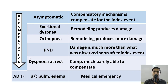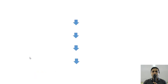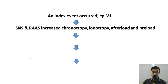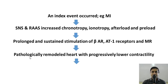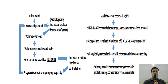If acute decompensated heart failure is not treated immediately, we may lose this patient. To summarize: an index event like an MI caused an increase in sympathetic nervous system activity and the RAS, leading to increased chronotropy, inotropy, afterload, and preload. This caused prolonged and sustained stimulation of the beta-adrenergic receptors, AT1 receptors, and mineralocorticoid receptors, resulting in a pathologically remodeled heart with progressively lower contractility. The patient gradually becomes more and more symptomatic until compensatory mechanisms fail. We are now ready to discuss the drugs used in heart failure.